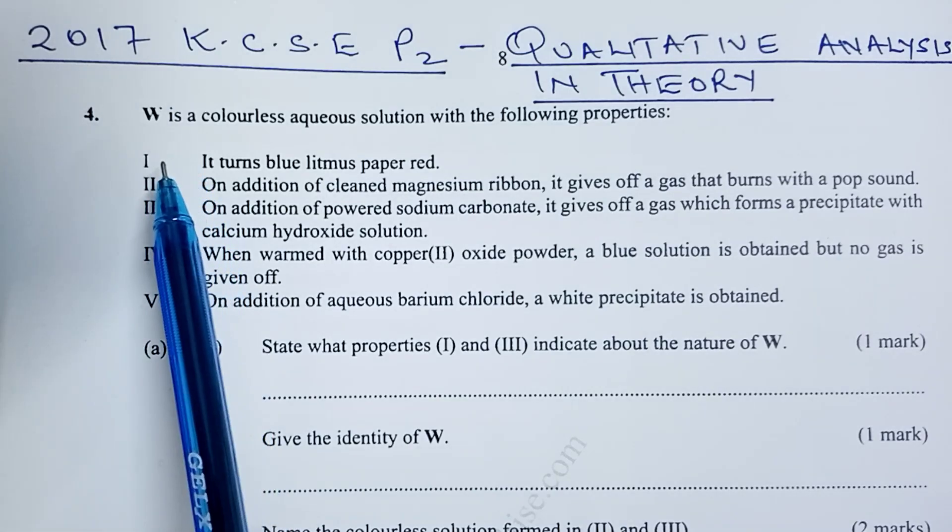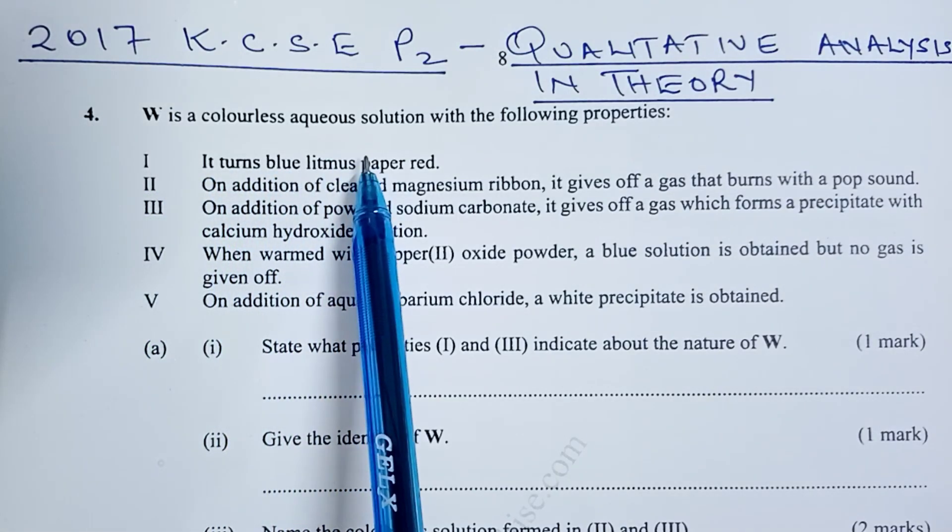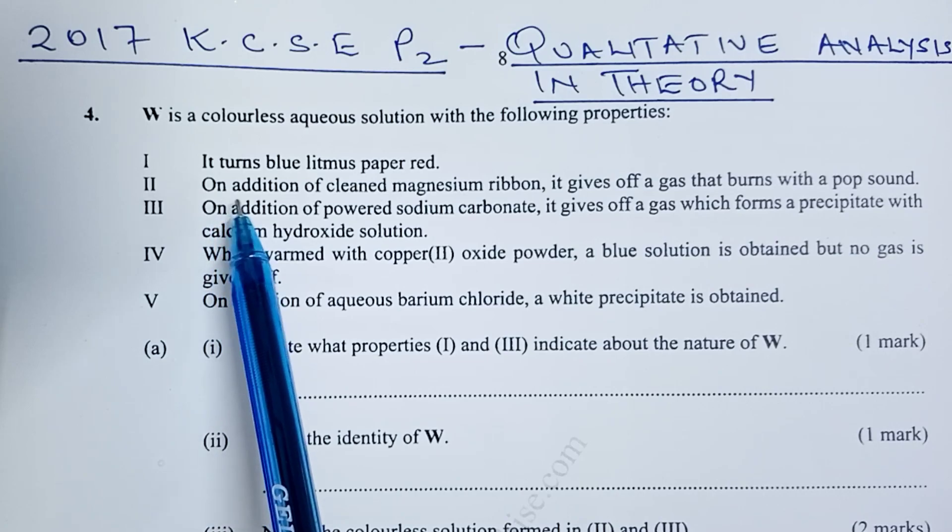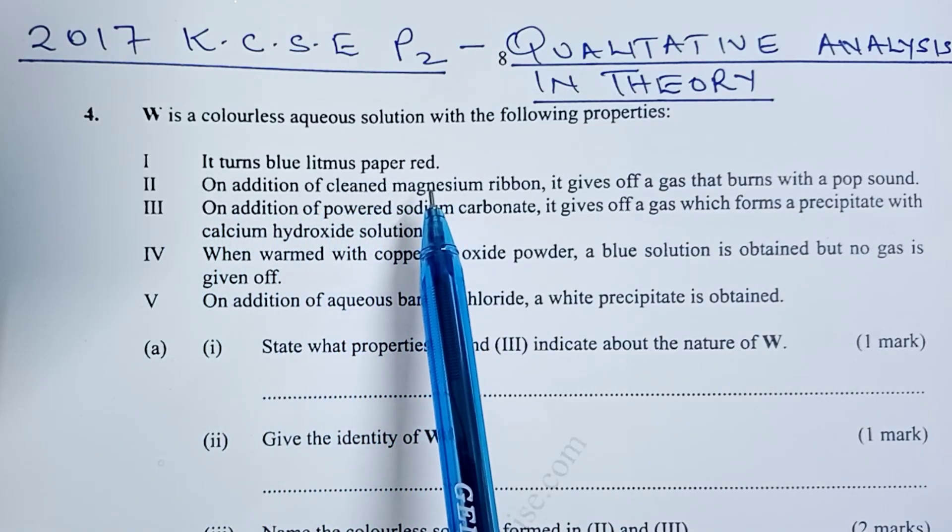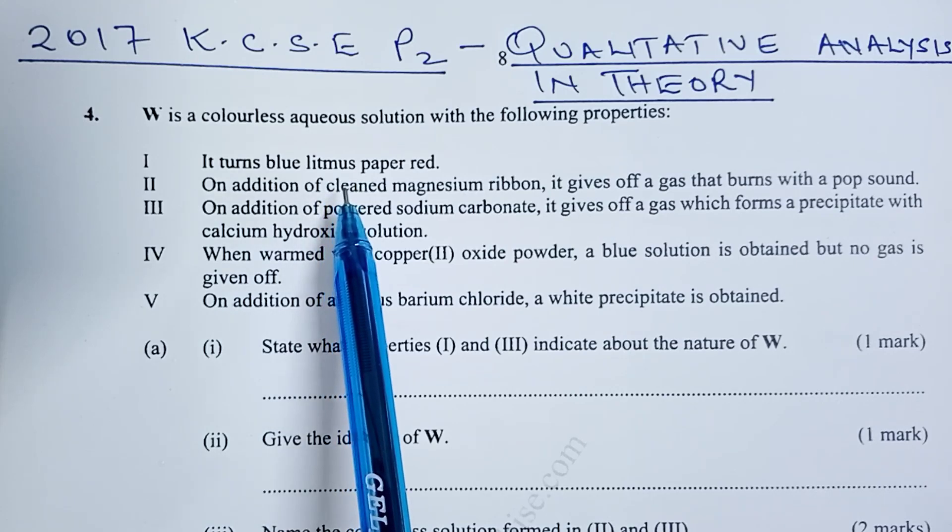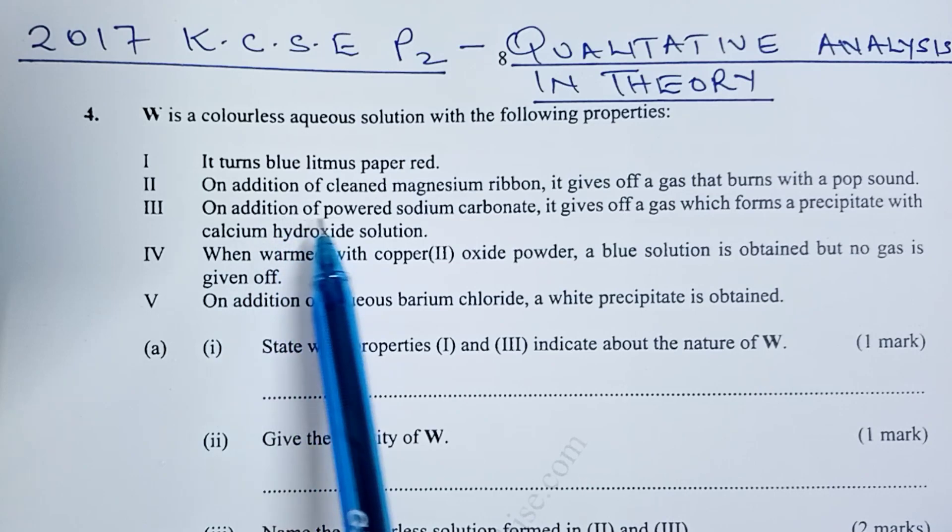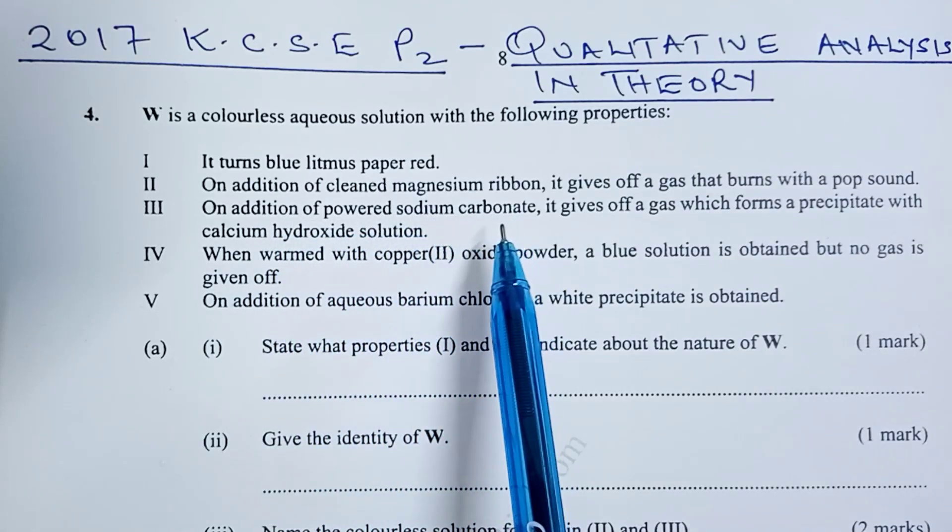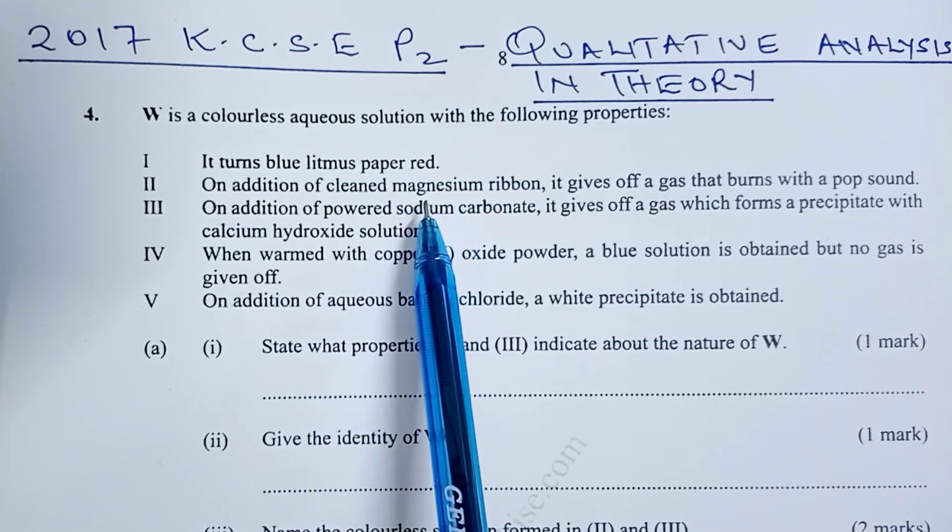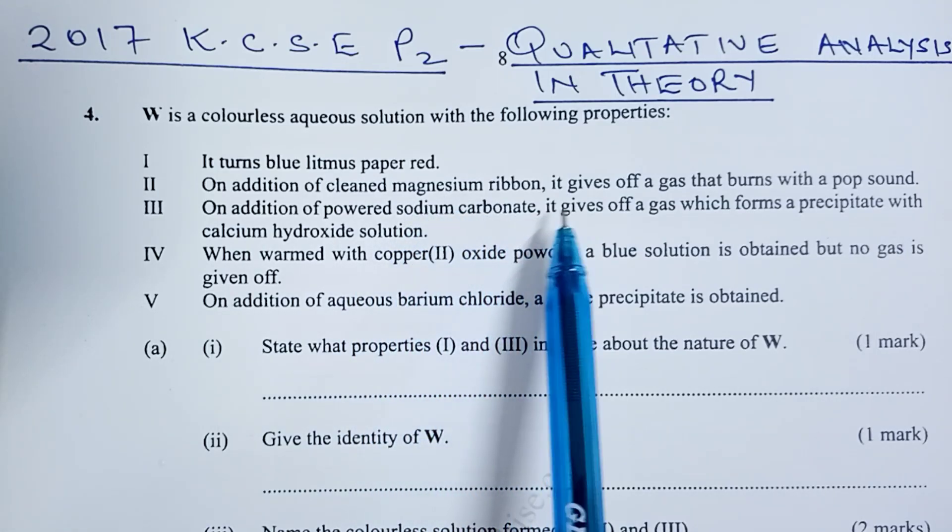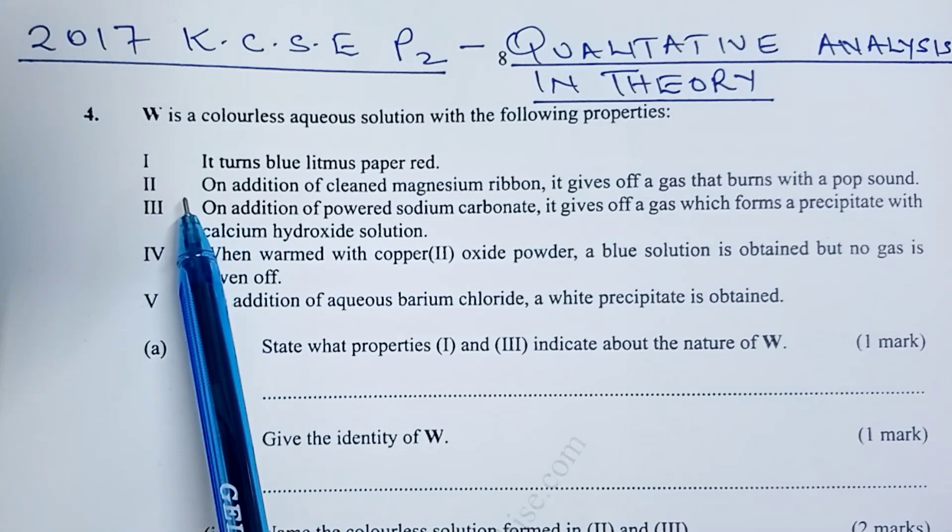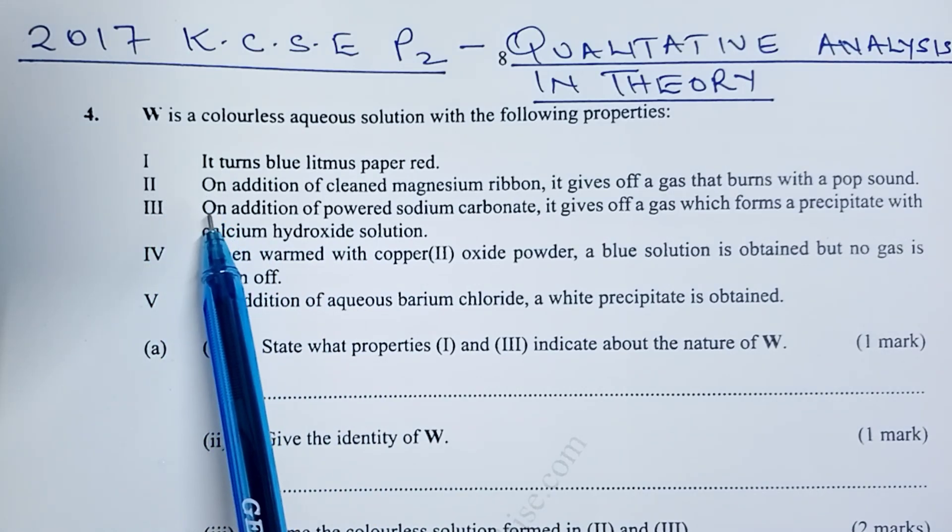We are told W is a colorless aqueous solution with the following properties. One, it turns blue litmus paper red. From this point we can tell that W is an acidic solution. Two, on addition of cleaned magnesium ribbon it gives off a gas that burns with a pop sound. So magnesium ribbon is a metal and the gas that burns with a pop sound is hydrogen gas. So point 2 confirms that W is an acid solution.